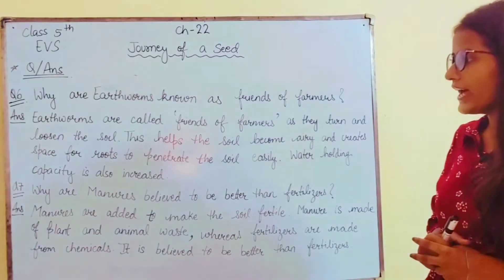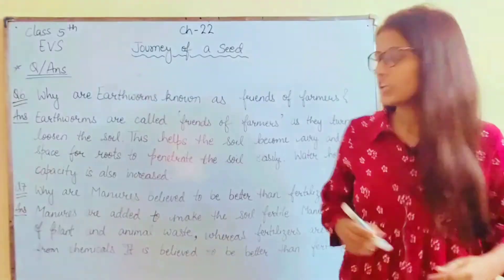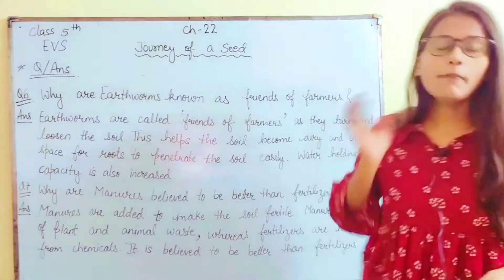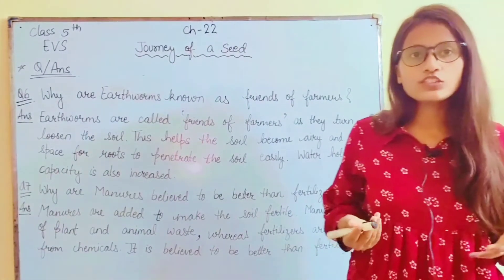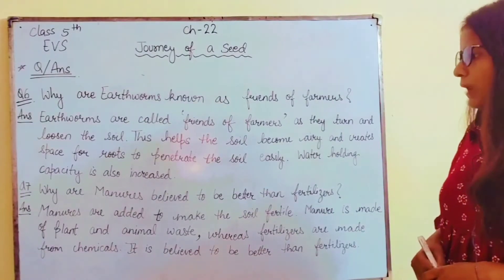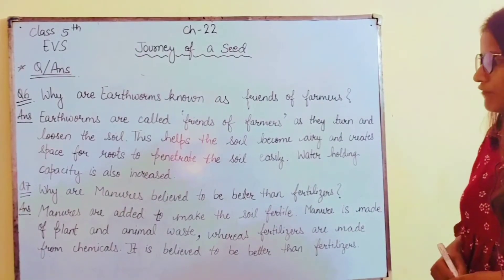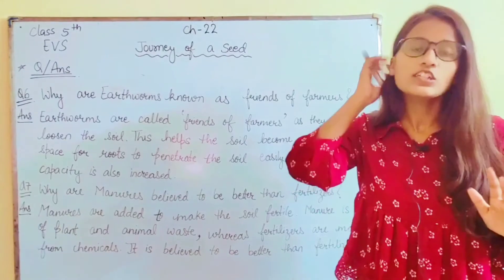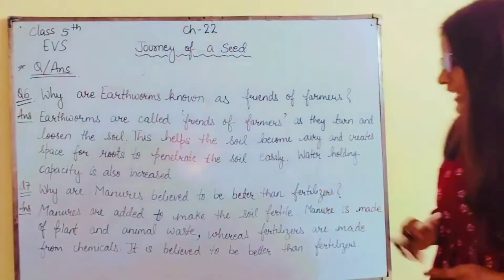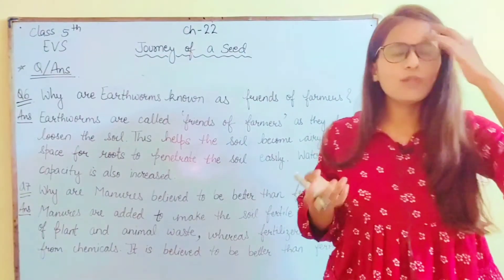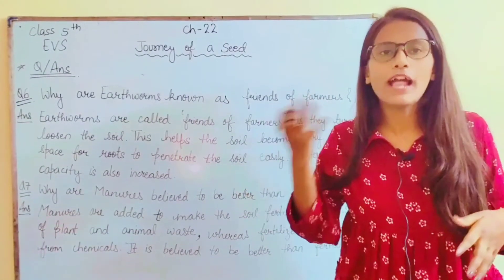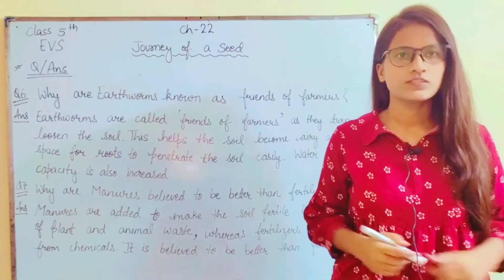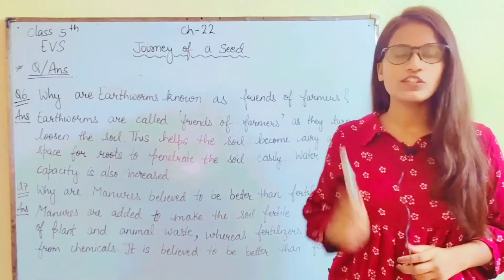Next question: why is manure believed to be better than fertilizers? Manure ko fertilizer se better kyun maana jata hai? Manure is added to make the soil fertile. Manure is made of plant and animal waste, whereas fertilizers are made from chemicals. Manure is natural, but fertilizer is chemical. That is why people believe that manure is better than fertilizer.